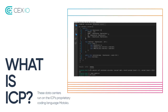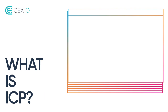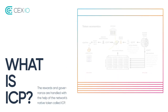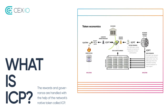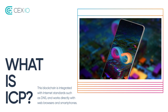These data centers run on ICP's proprietary coding language, Motoko. The rewards and governance are handled with the help of the network's native token called ICP. This blockchain is integrated with internet standards such as DNS and works directly with web browsers and smartphones.